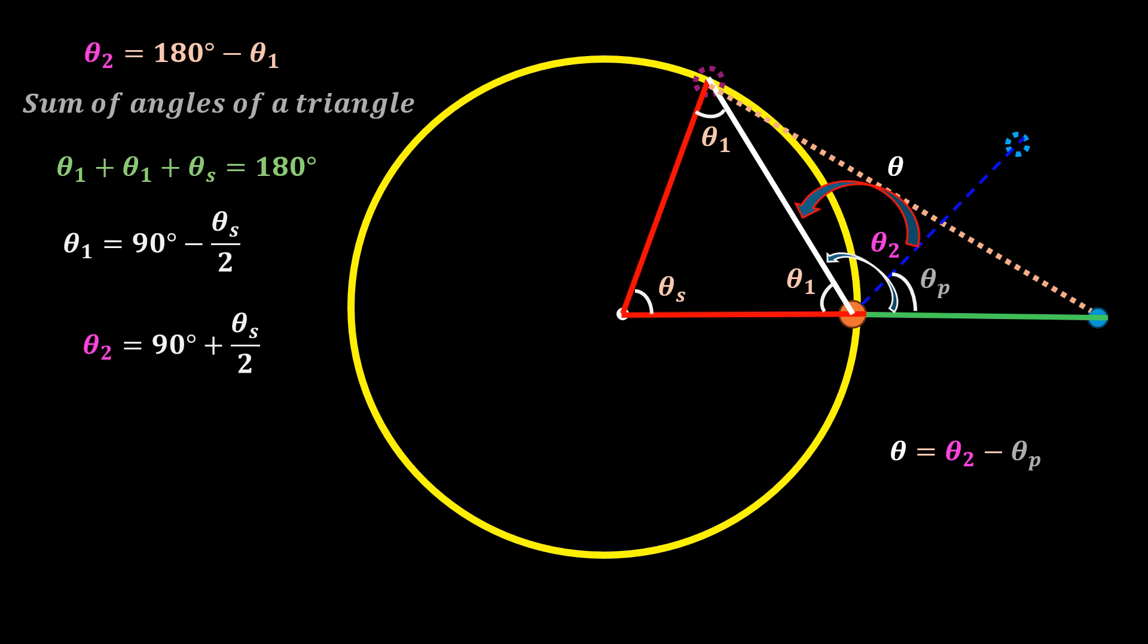Since theta is equal to this, we can now sub in the expressions for theta 2 and theta p to have this. We have just written 90 degrees in radians as pi over 2.